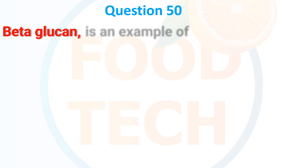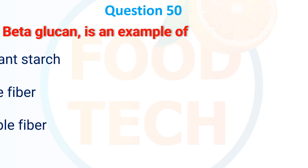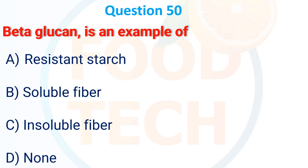Question 50. Beta-glucan is an example of: A. Resistant starch. B. Soluble fiber. C. Insoluble fiber. D. None. The correct answer is B: soluble fiber.